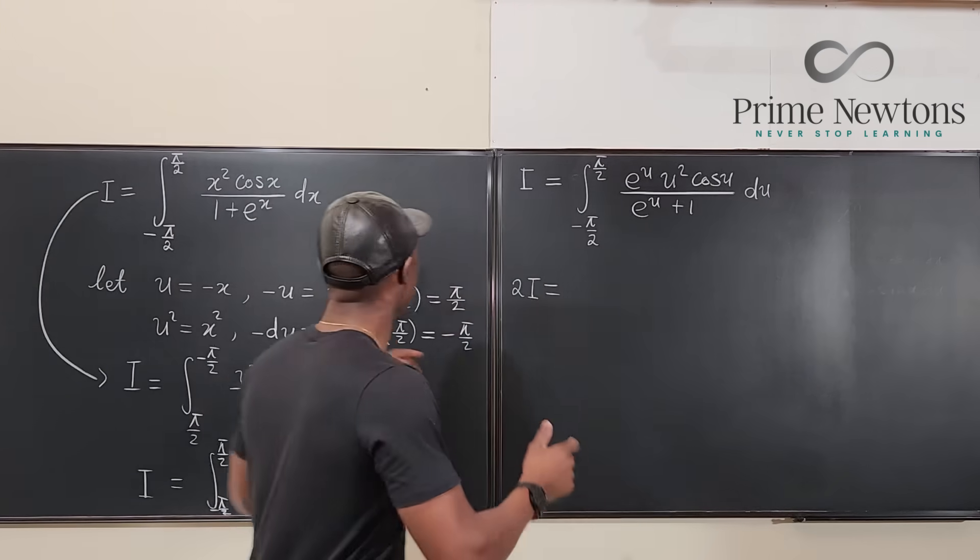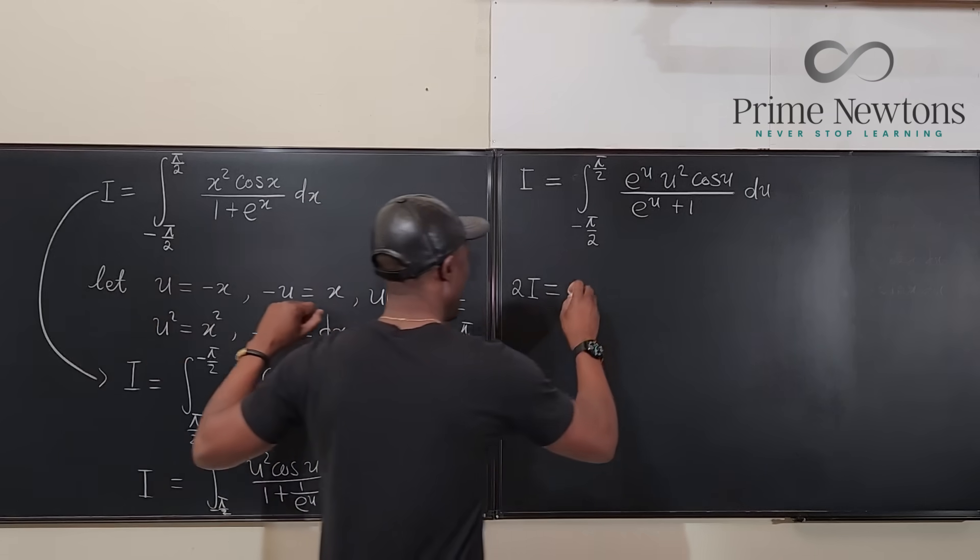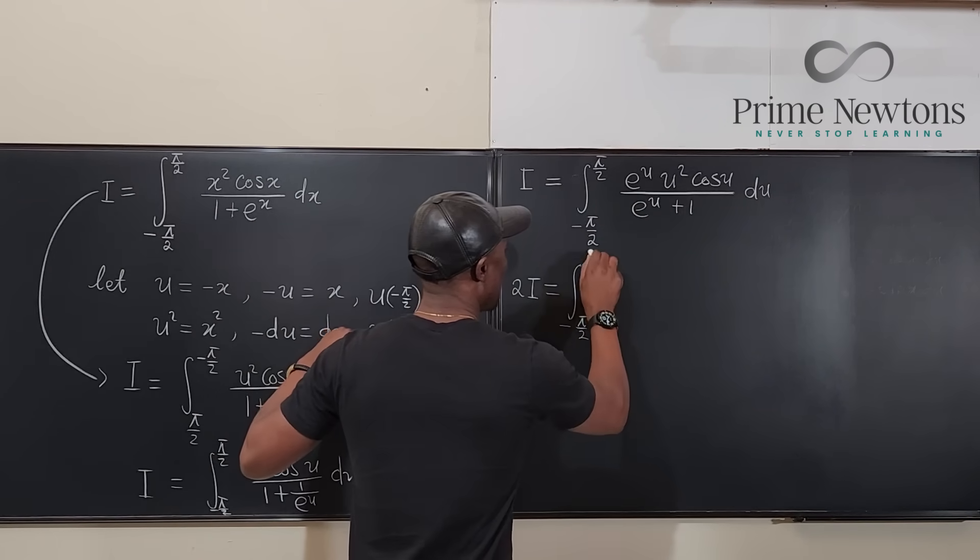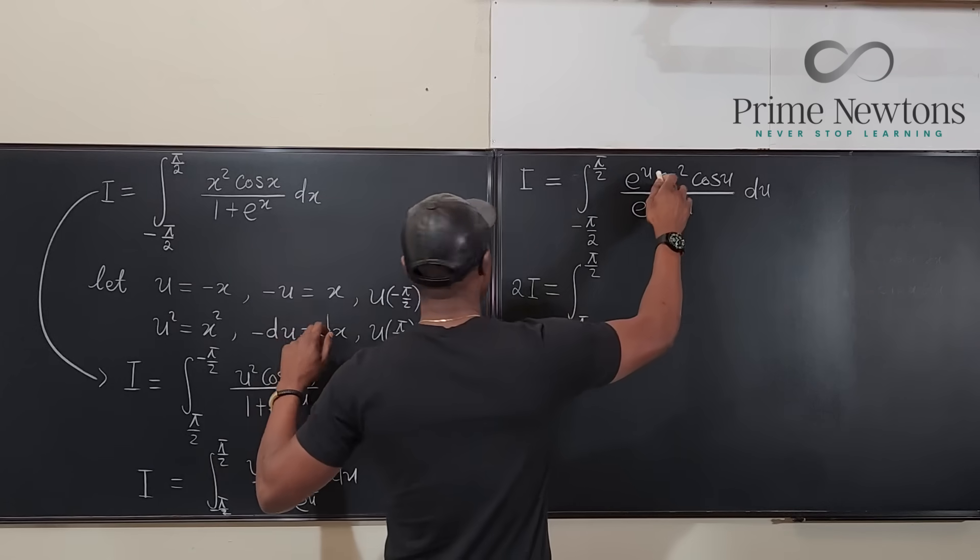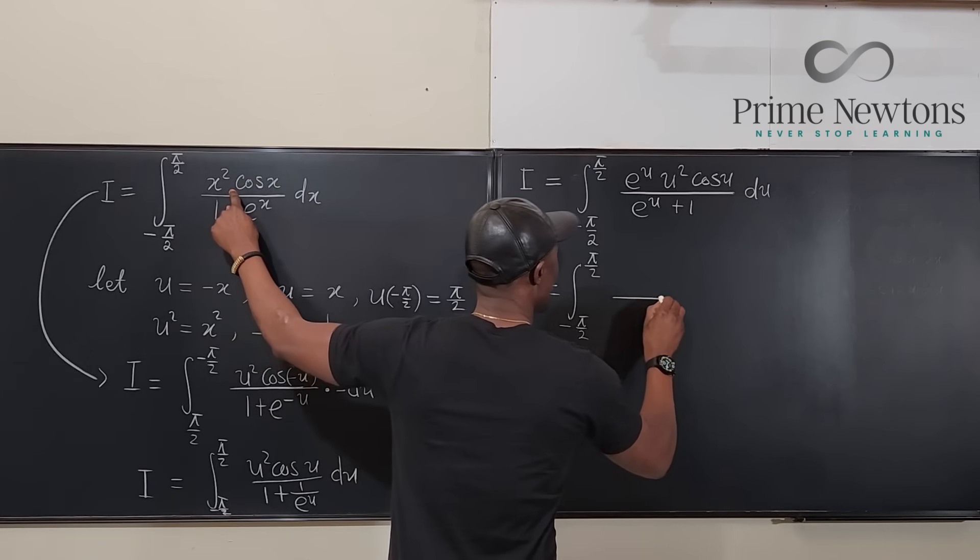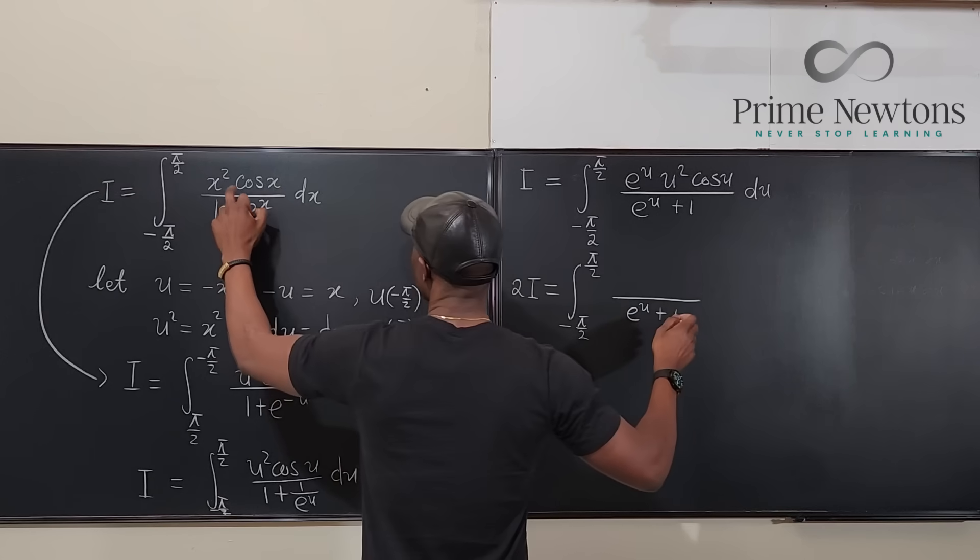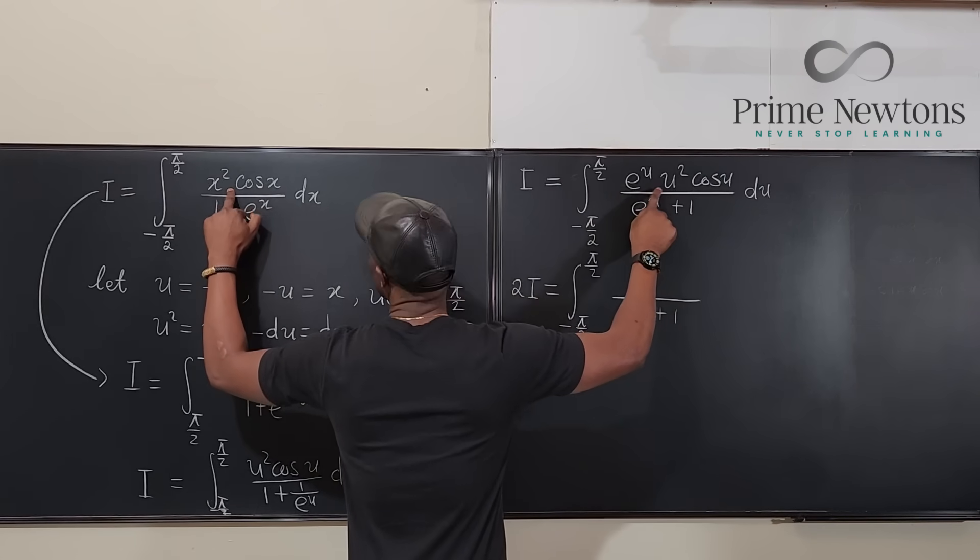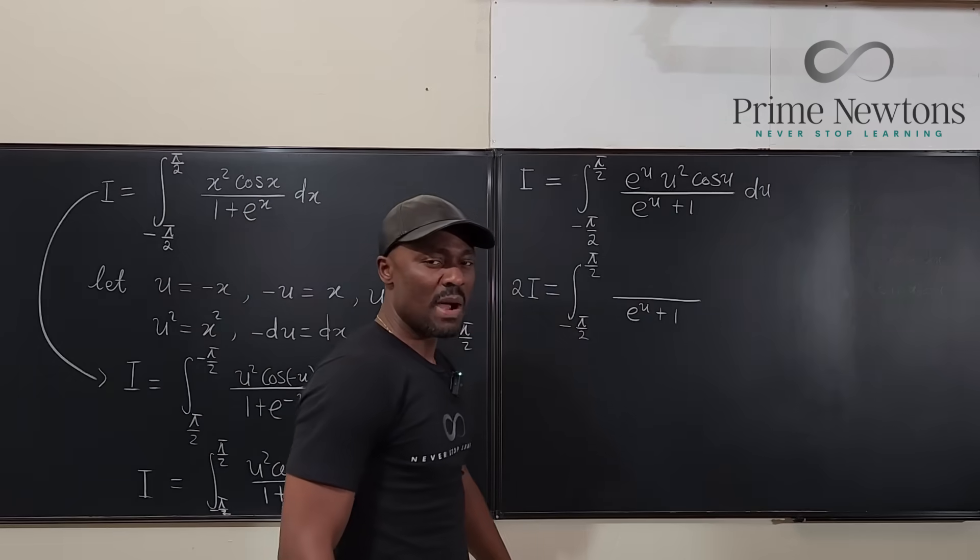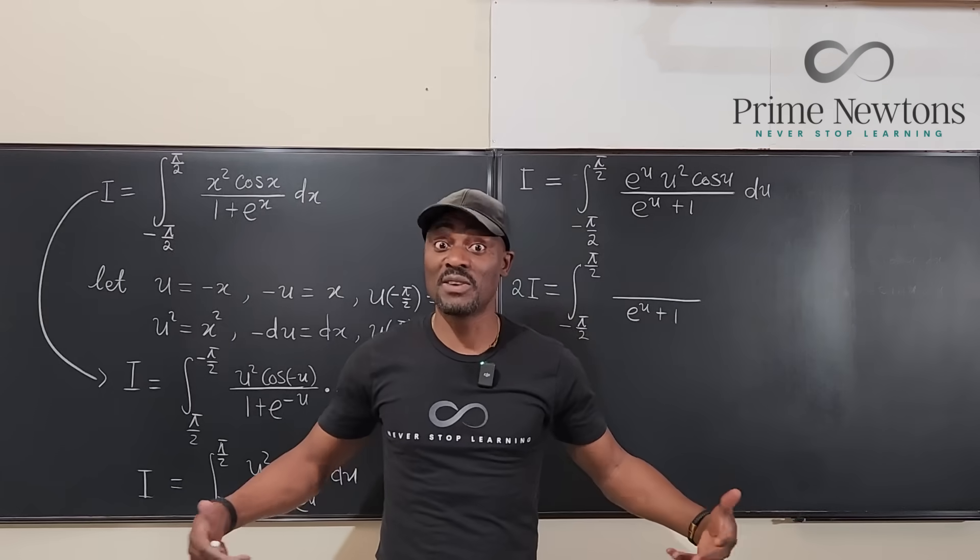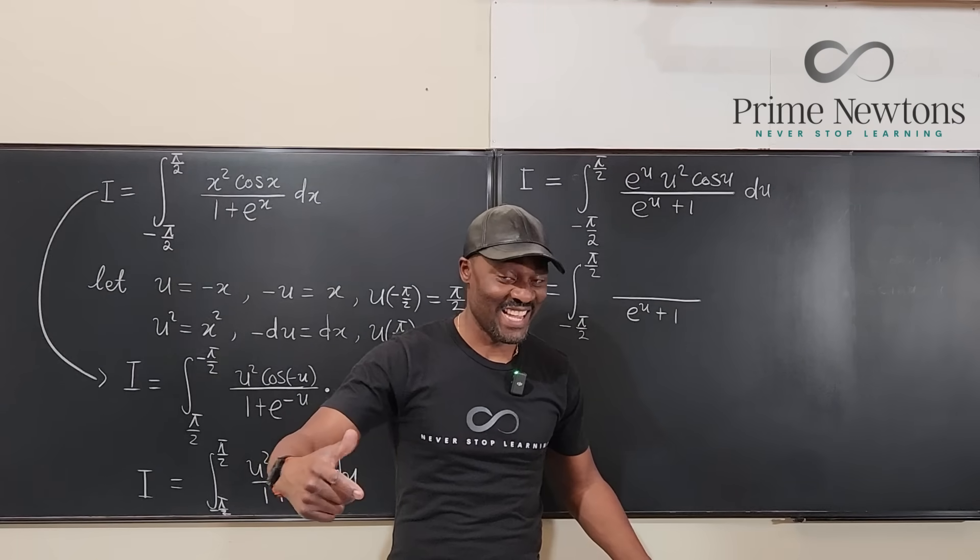So all you have to do is if you add the two arguments together you're going to end up with the integral from negative π/2 to π/2. If we add this to this notice that the denominator is the same so we don't need to worry about the denominator. It's e to the u plus 1. The numerator, this has x squared cosine x, this has e to the u times u squared cosine u. Now you might be saying well this is u this is x. It doesn't matter what variable you use, remember that. It doesn't matter.